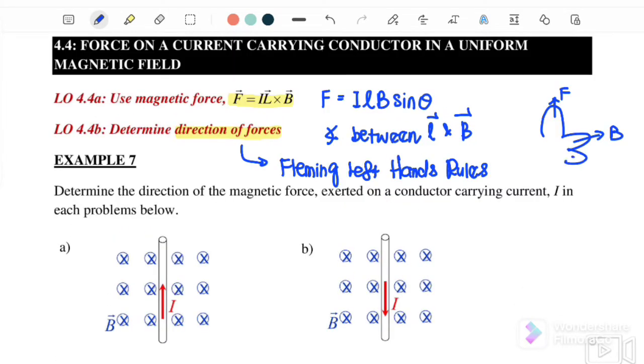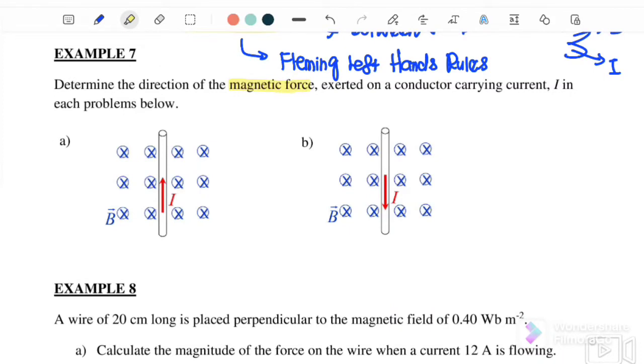Example 7. This is B. The second finger represents the direction of the current flow. Let us start with example 7. Determine the direction of the magnetic force exerted on a conductor carrying current I in each problem. Here I is going upward and B is into the page, so we need to determine the direction of the magnetic force. Therefore the force is adding to the left. This is the direction of the magnetic force acting on the current carrying conductor.